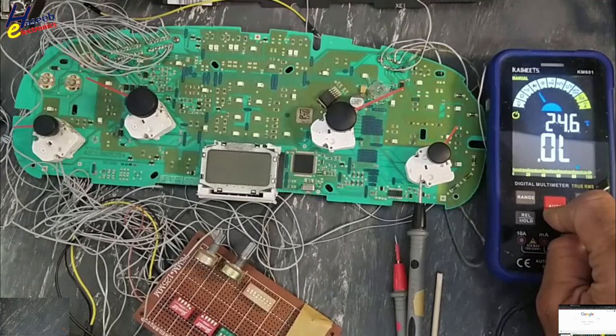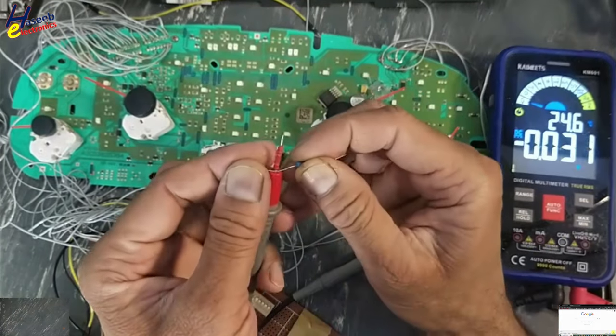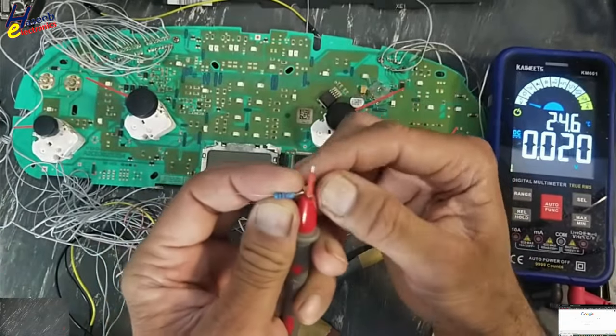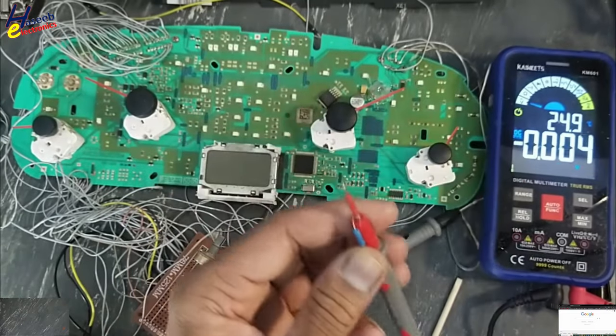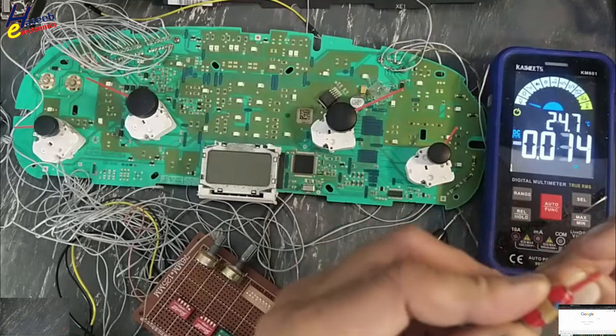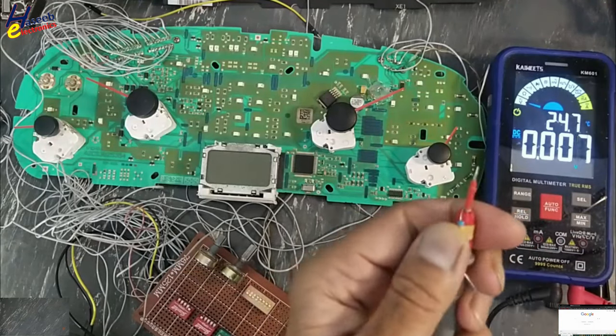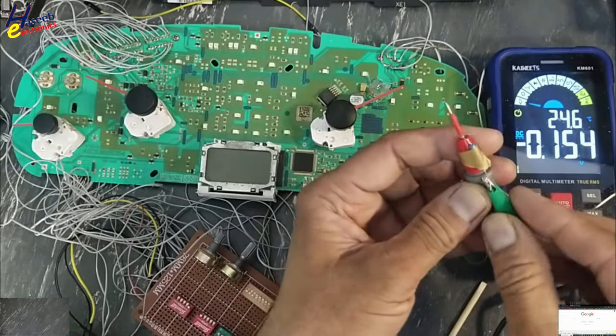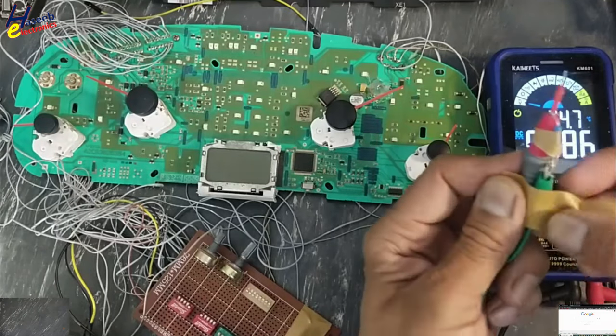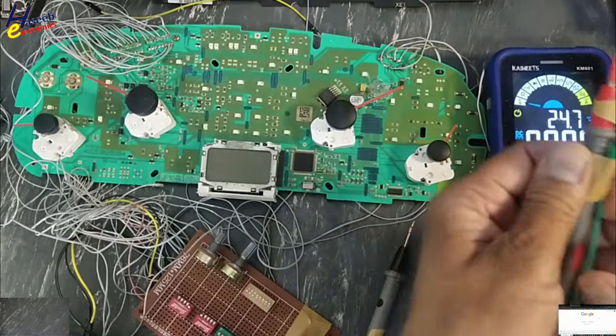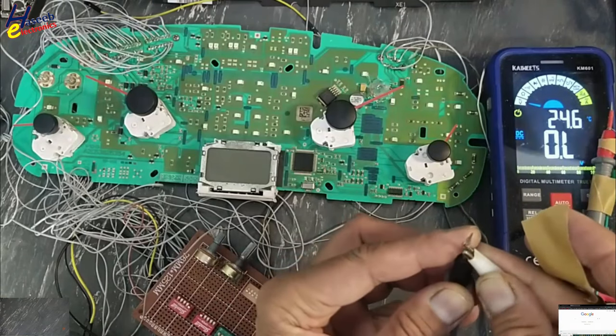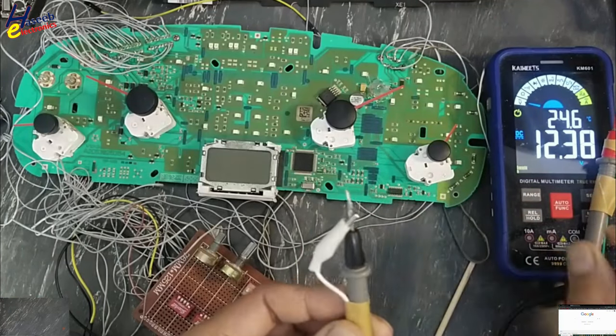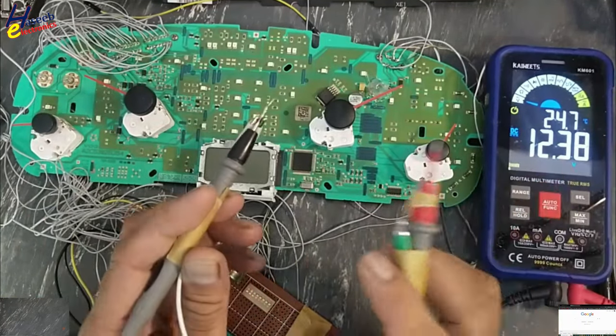To test it, set multimeter to voltage. I will use one kilo ohm resistor. I connected to positive terminal. I will take 12 volt positive here and common wire at negative terminal. It is showing 12 volts.